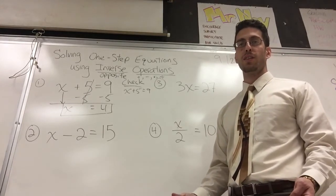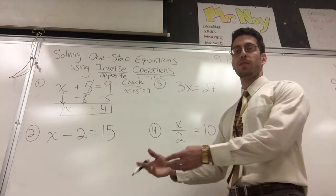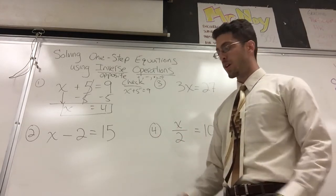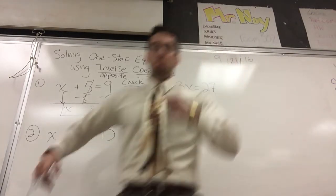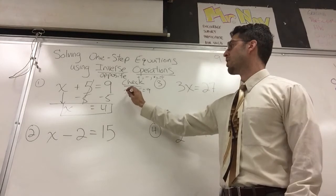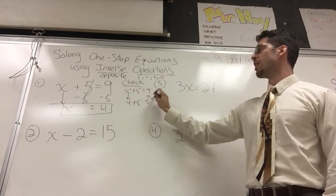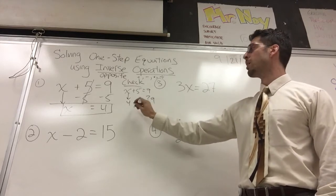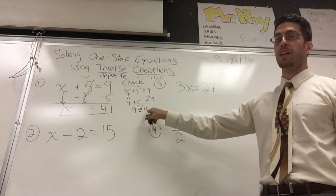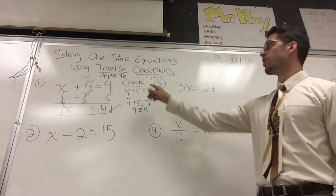You ever watch sports? It's fourth quarter. We're already winning by 30. So I'm going to take all my good players out and substitute. So good player goes out. Substitute jumps in. Same. Same thing here. X goes out. And four jumps in. And I want to see if four plus five really does equal nine. I'm not sure until I add them up. Oh, yeah, nine does equal nine. So I am correct. The answer is not nine. The answer is four. Four is correct. You're checking.